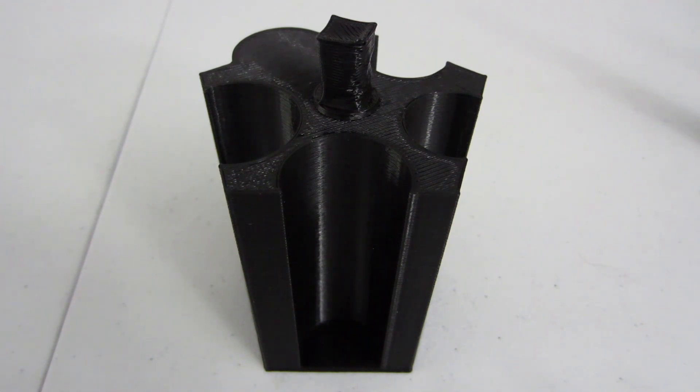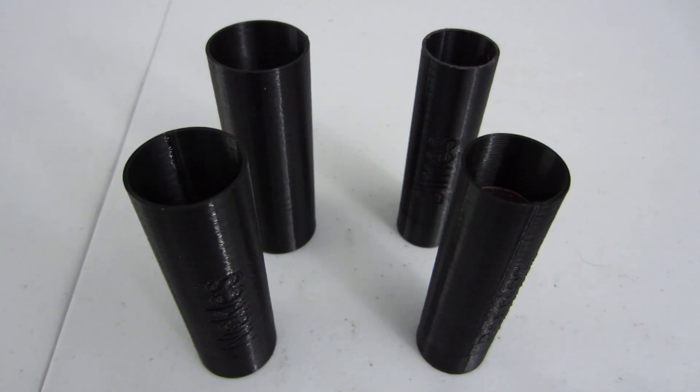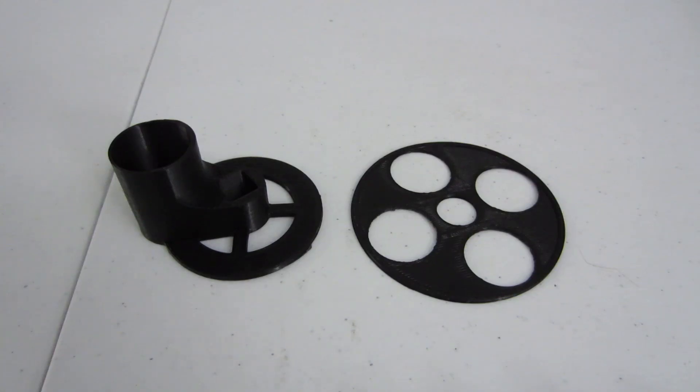So this design works by having four main components. There's a main container that holds everything, four sleeves which hold all the coins, and then two pieces which are used to put the coins inside the sleeves.